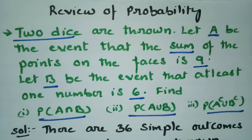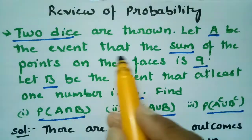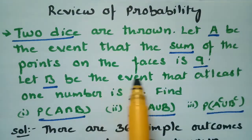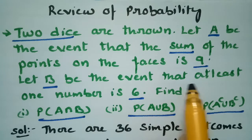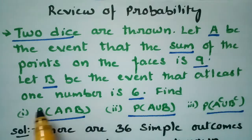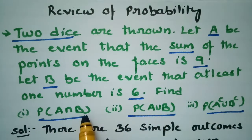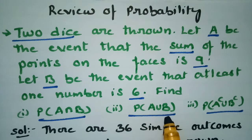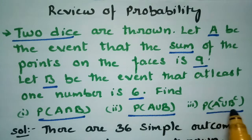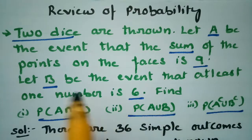This problem is from probability. Two dice are thrown. Let A be the event that the sum of the points on the faces is 9. Let B be the event that at least one number is 6. Find A intersection B, probability of A union B, and probability of A complement union B complement.